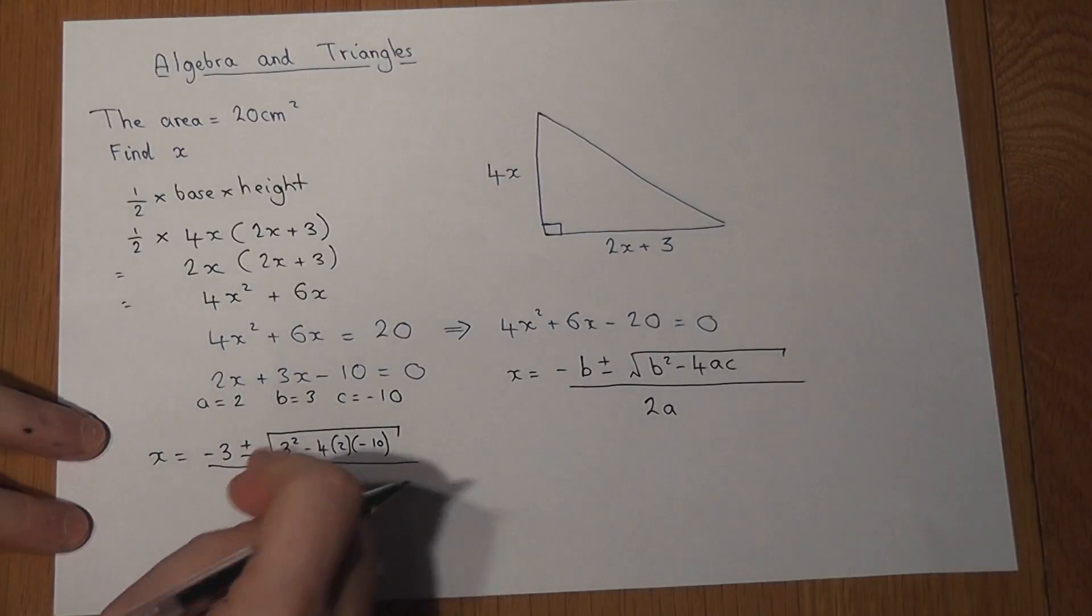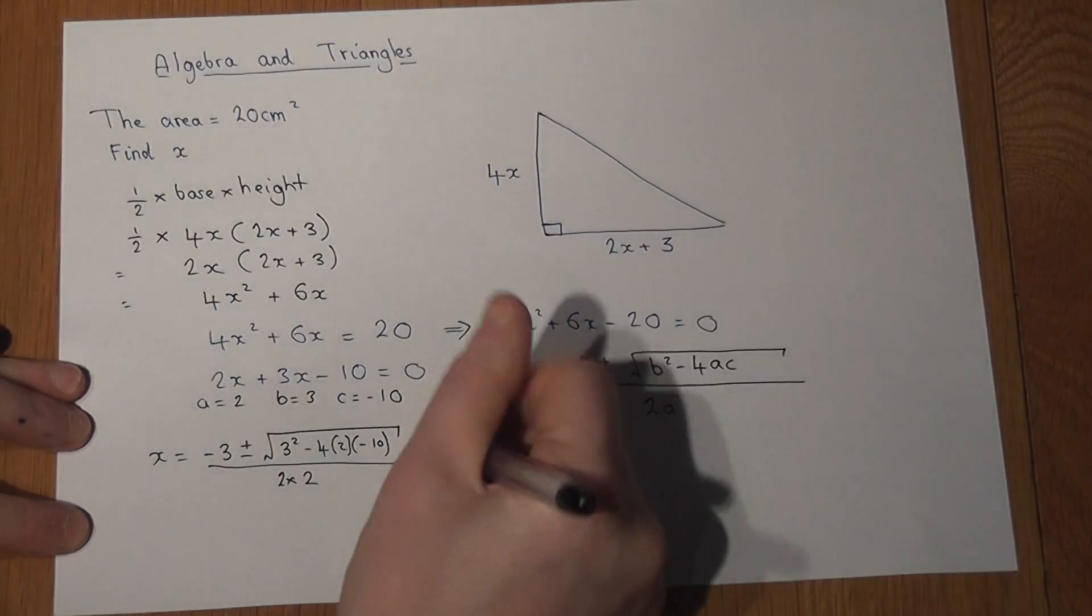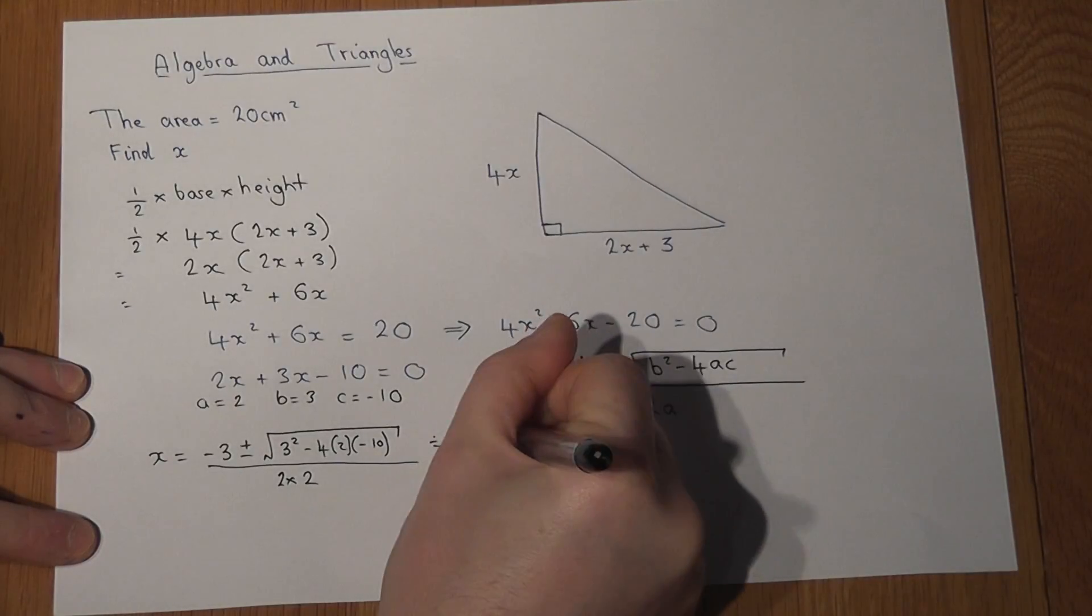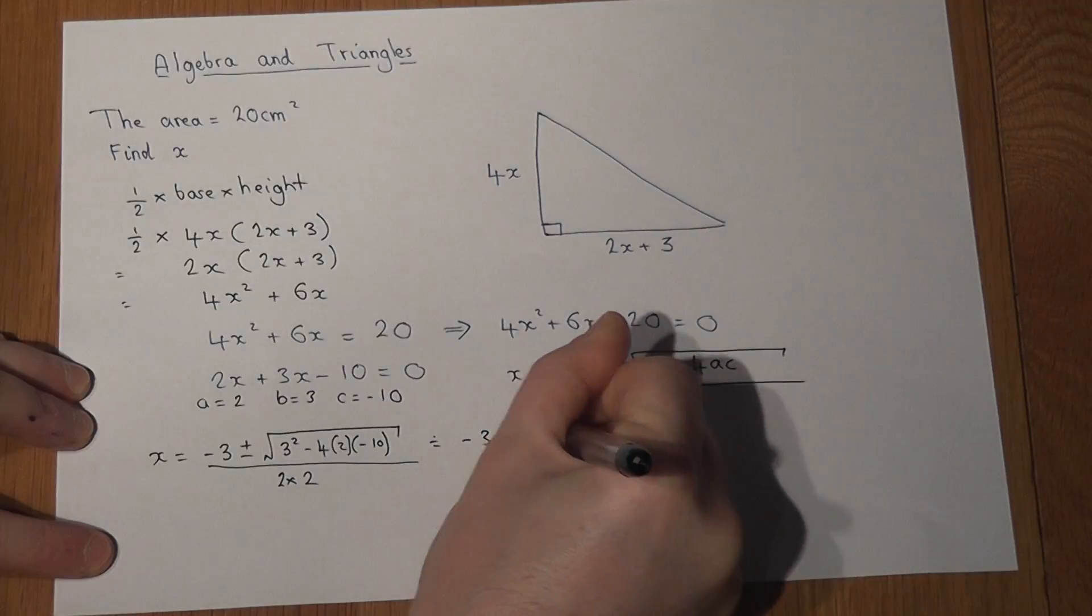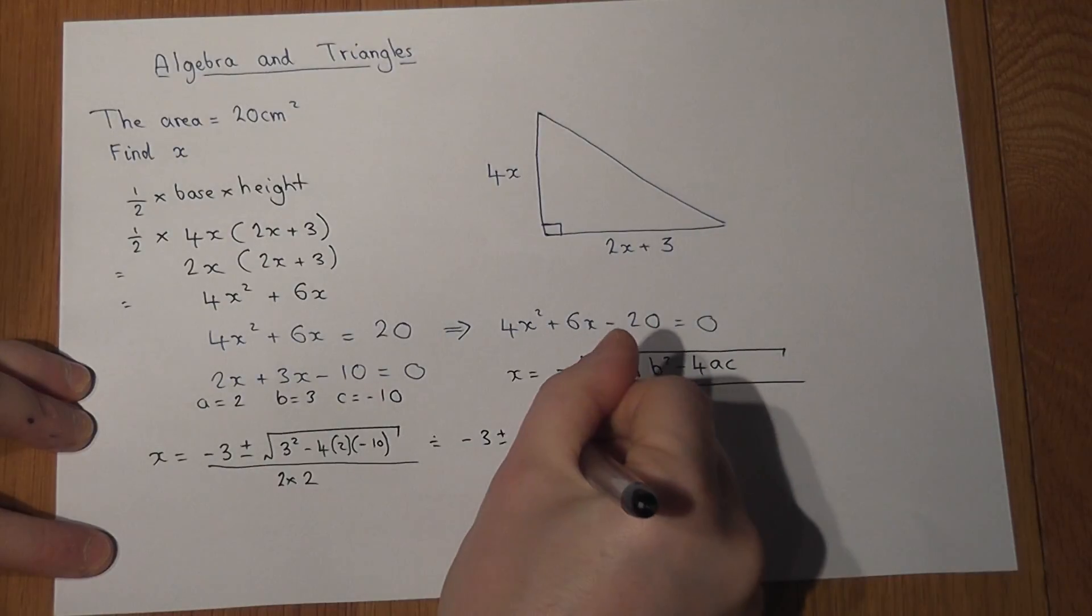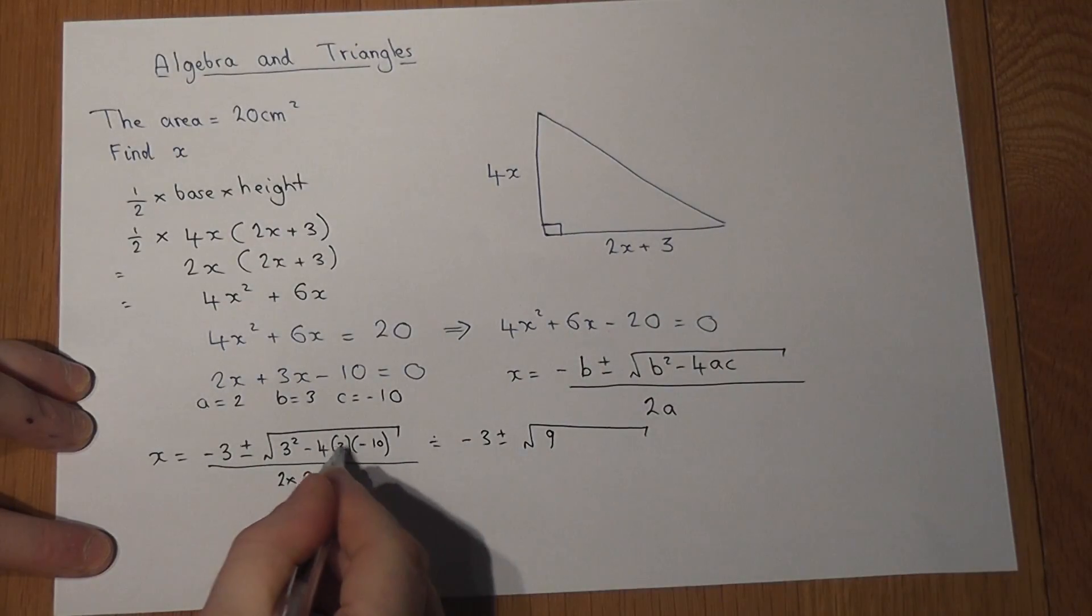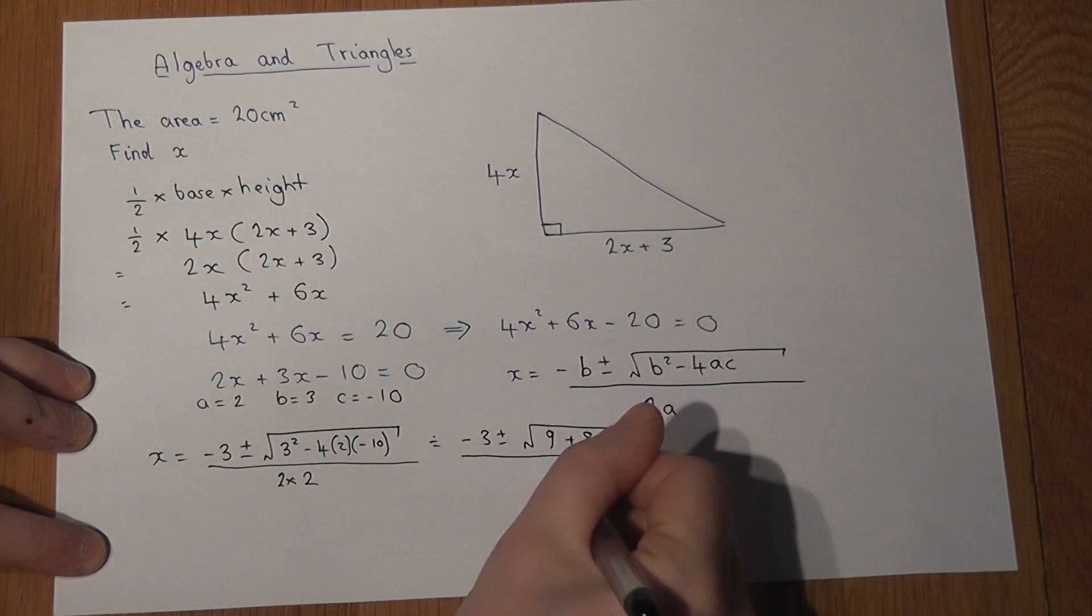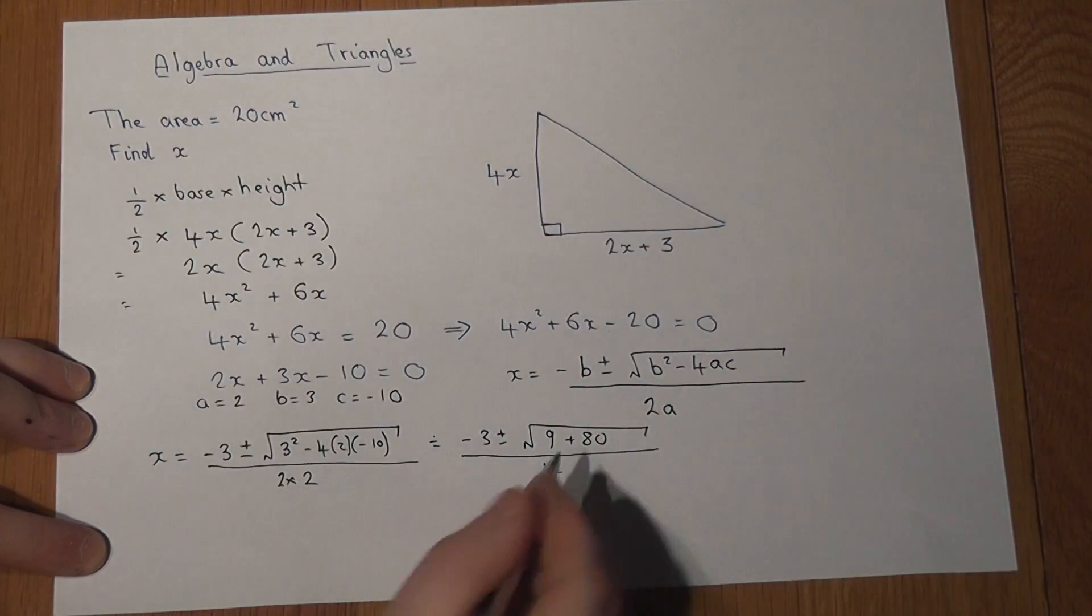Now I can enter this as it is into a calculator to work it out, but I will just do a few more steps before I do that. Minus 3 plus or minus 3 squared is 9. 4 times 2 times 10 is 8 times 10, which is 80. 2 negatives make it plus 80, and that's all over 4 because 2 times 2 is 4.